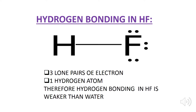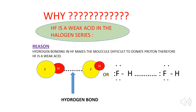Now let's talk about hydrogen bonding in hydrogen fluoride. Look at the structure of hydrogen fluoride — it has three lone pairs of electrons and one hydrogen atom. Therefore, the hydrogen bonding in hydrogen fluoride is weaker than that of water. We know that halogens are strong acids, so why is hydrogen fluoride a weak acid? The answer is that hydrogen bonding in hydrogen fluoride makes the molecule difficult to donate a proton, and therefore hydrogen fluoride is a weak acid.